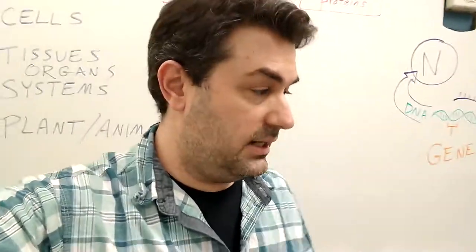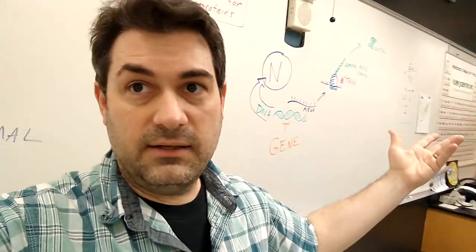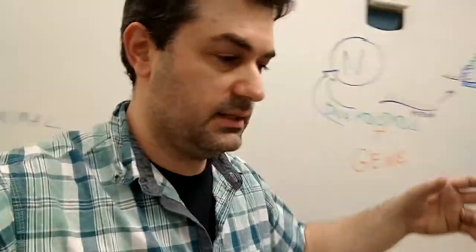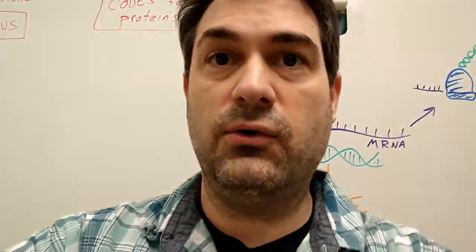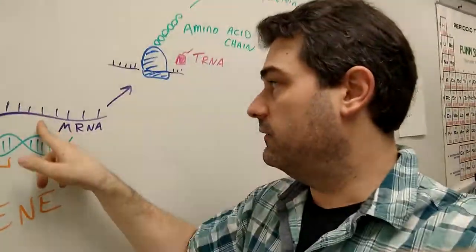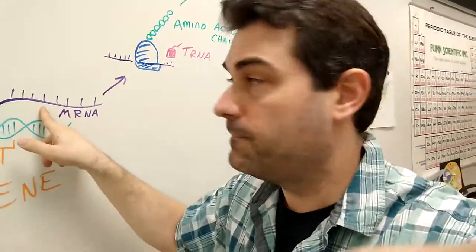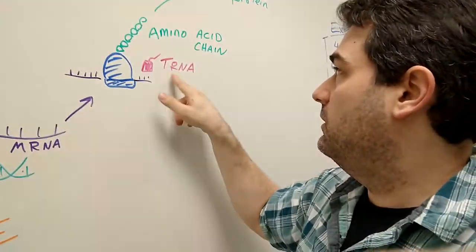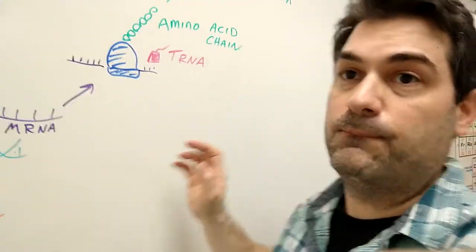We had an activity today, the colored chicken is the activity. The way it worked was this: each table was a group, and each person in the group was one of these different parts. One of them was the messenger RNA, one was the ribosome, one was the transfer RNA, and the other was the protein.